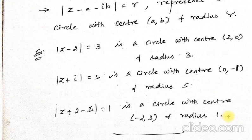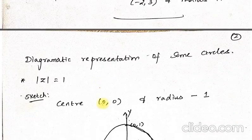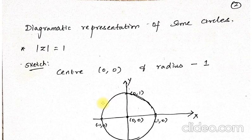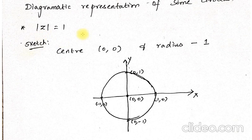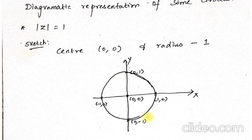Before going for the diagrammatic representation, we must know what the given curve is — that is very, very important. Now, how are we representing a circle in a diagram? Consider |Z| = 1, which is a simpler problem to start with. The shape is a circle. For mathematics, only the points you plot matter.